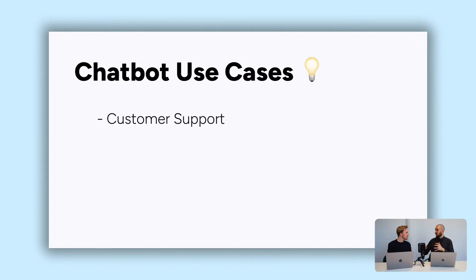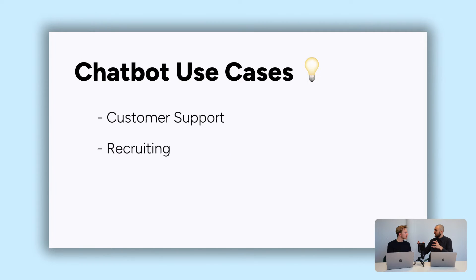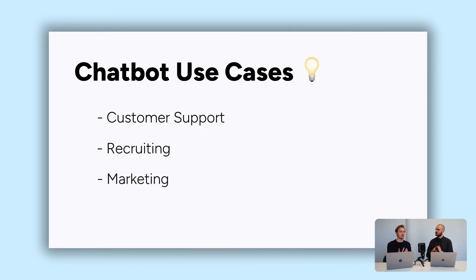For support, A/B/C could be: A for 'I have a problem,' B for 'my WhatsApp isn't working,' C for 'talk to a human.' For recruiting, the buttons could represent different job positions — sales manager, customer success, or other roles. You can also use this for marketing to segment newsletter subscribers or for sales to qualify incoming messages.